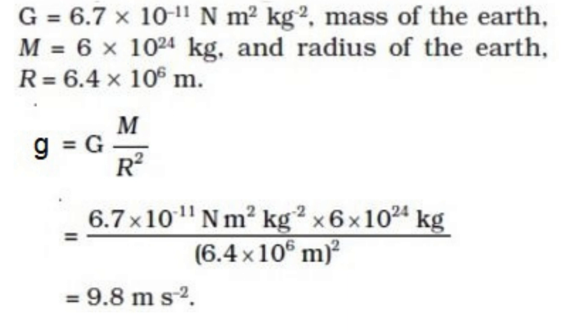Small g ki value calculate ki ja rahi hai. Dhyan rahe ki ye formula maan leta hai ki mass spherically symmetric distributed hai. Lekin aksar, hamen g ki approximate value kaafi hoti hai, jo ki 9.8 meter per second square hoti hai, aur ye value Earth ke surface ke paas hoti hai.